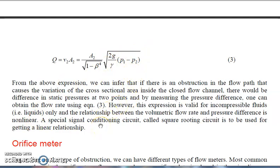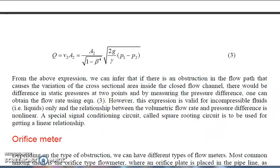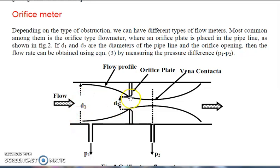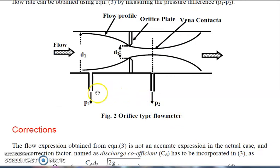We can use a signal conditioning unit to make the relationship linear. One best example is the orifice meter. An orifice plate is a circular disc-type structure with a hole in the center. Taking the cross section of a pipe, this is the orifice plate and this is the flow profile of the liquid flowing from left to right. D1 is the diameter at cross section 1, and D2 is the diameter at cross section 2. By putting those values into the formula derived for Q, we can measure the flow rate.